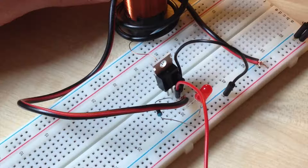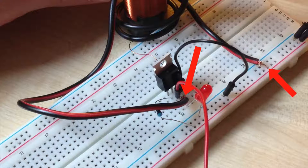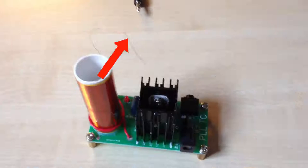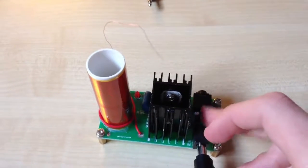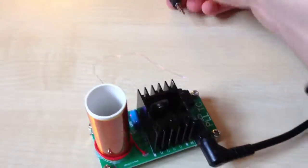If your coil doesn't work, try to switch cables of secondary coil to opposite pin, or make more or less secondary turns. You can also buy this Tesla coil kit from eBay. Link is in video description.